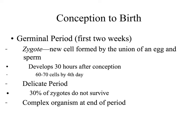Please note that this is a delicate period, as 30% of zygotes do not survive. Oftentimes, when a woman may have conceived, she may not know she's pregnant — there may be a delay in her period, but she would still have a period thereafter, leading her to believe she was never pregnant. It is possible that she may have conceived, but due to multiple factors the pregnancy may have been terminated, accounting for that 30%. Upon completion of the first two weeks — the germinal period — the organism is considered to be a complex organism, and the cells are beginning to take shape into what will become a human.